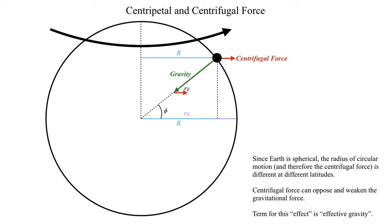If we do a vector sum — taking the tail of one vector and putting it on the tip of the other — we can see that the x-component of gravity is in fact a little bit weaker. Using some geometry, we can show that the overall effect of gravity is reduced by the centrifugal force. So that's a conceptual overview of effective gravity: it's the force of gravity and the centrifugal force opposing one another, and the reason we have the centrifugal force is because the Earth is rotating.